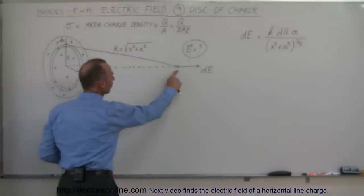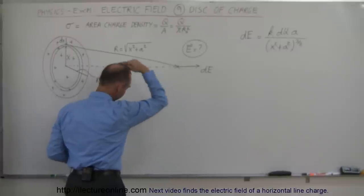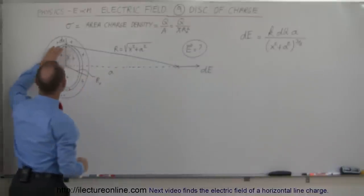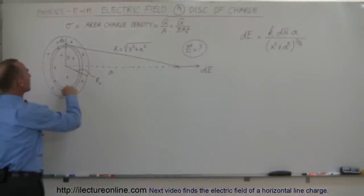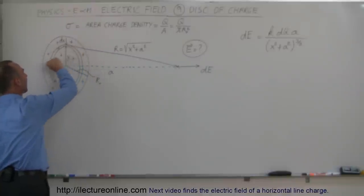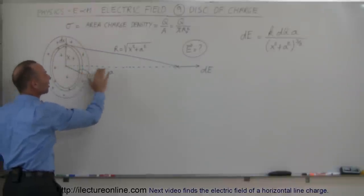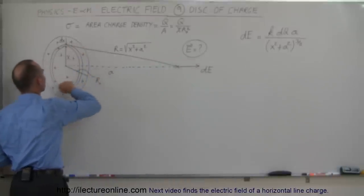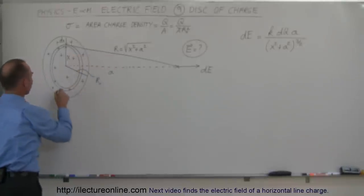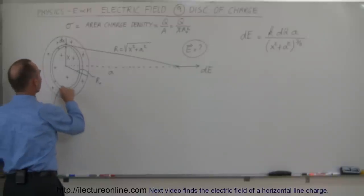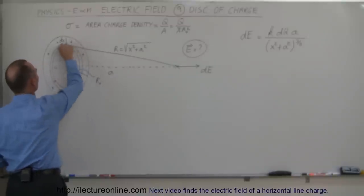The point where we're trying to find the electric field is a distance A away from the disk. What we're going to do is take a little ringlet and make a representative small dE caused by that small ringlet full of charge dQ. That ringlet will have a small charge dQ. Remember from the previous video, we did find the electric field caused by a ring of charge.